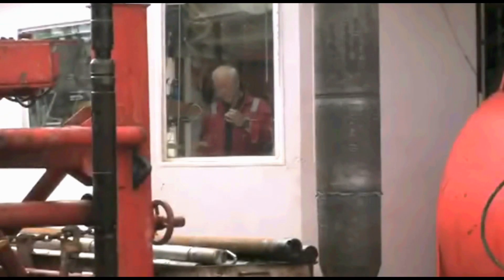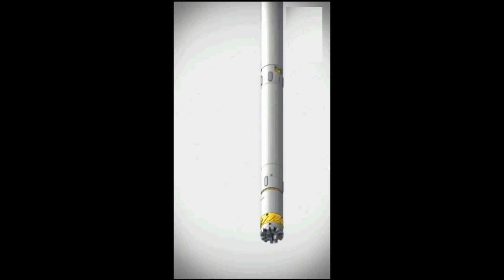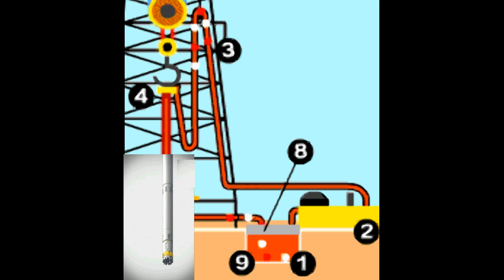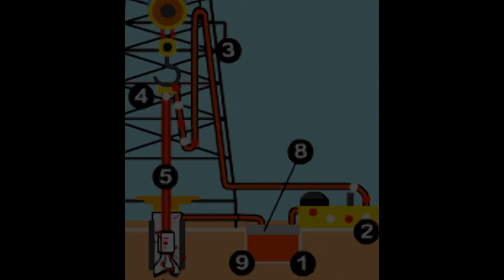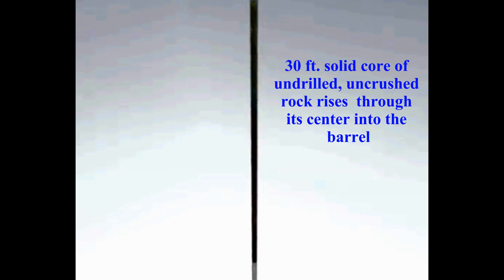In conventional coring, the drill string is pulled out of the hole and the drill bit is replaced with a conventional core assembly that consists of a donut-shaped diamond or PDC bit that runs on a hollow core barrel. This string is then run back to the bottom where rotation and mud circulation is restarted. As the bit penetrates the rock face, a solid core of undrilled, uncrushed rock rises through its center into the barrel.